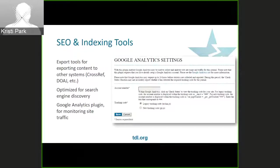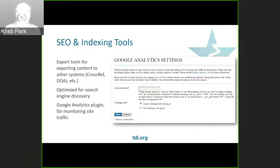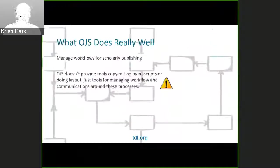OJS also comes with a number of search engine optimization and indexing tools that help raise the profile of your journal and track its usage. These tools include a Google Analytics plugin that lets you track website usage and downloads. There are also export tools for exporting content to other indexing systems like CrossRef and the Directory of Open Access Journals. Overall, what OJS does really well is help you manage the workflows around scholarly publishing — managing communication, managing all those versions, and helping with indexing.